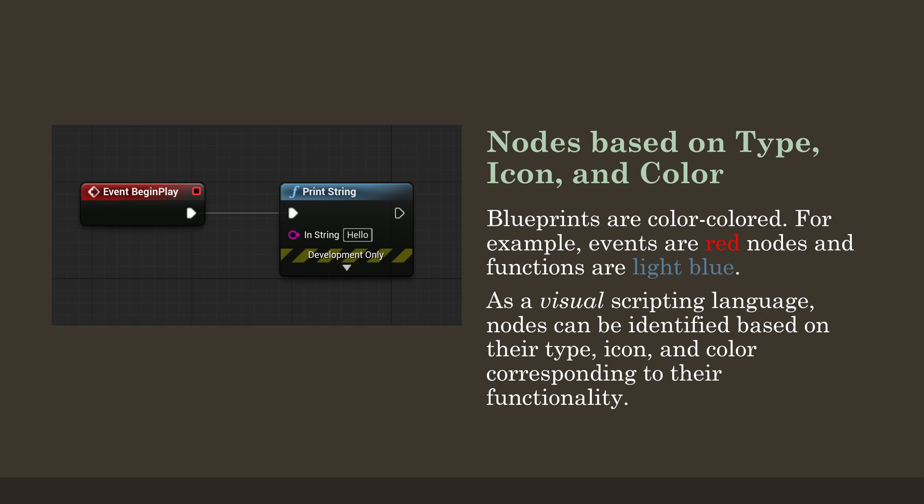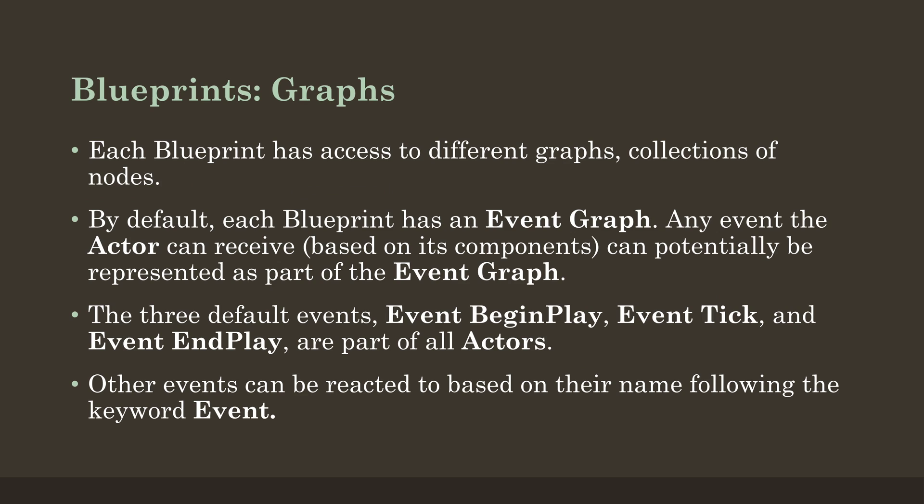Let's dig into these two main concepts. Nodes are color coded, but let's talk about graphs first. Graphs are collections of nodes. By default, each blueprint has an event graph. Blueprints could have access to many different graphs, many different collections of nodes, but by default all of them have access to the event graph. This is a graph representing any events the actor can receive. These events are based on the components of the actor — the actor is the entity, and its corresponding components talk to different systems. So potentially there could be many different possible events available within the event graph of any one actor.